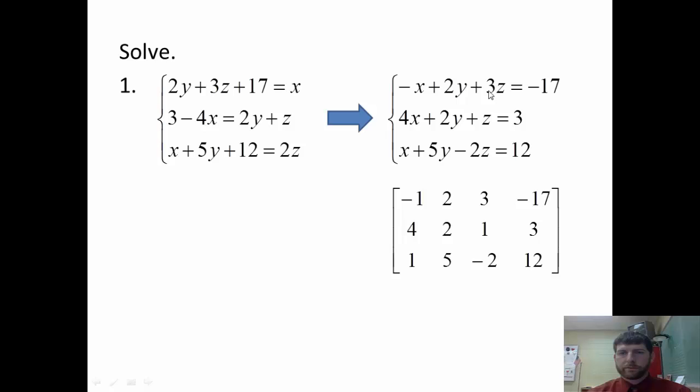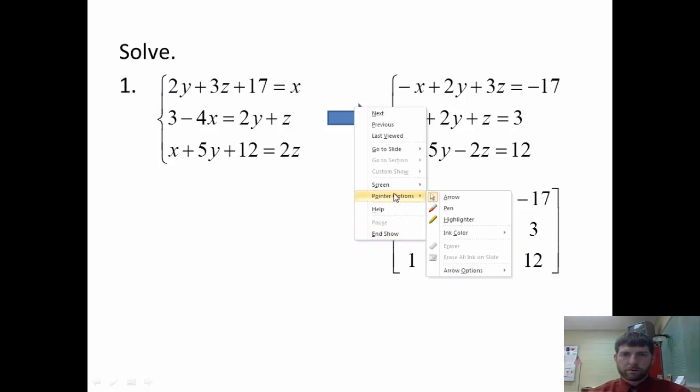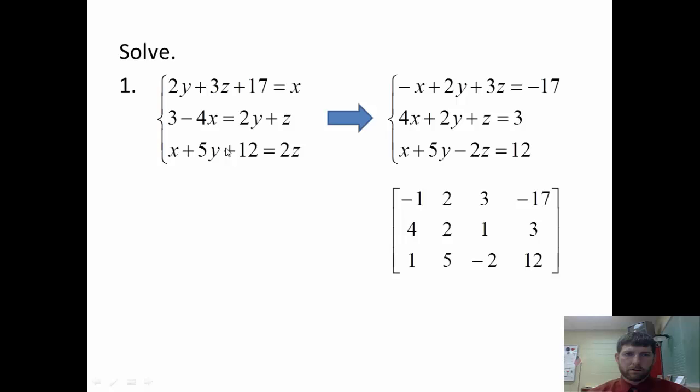3Z, 1Z, negative 2Z. Negative 17, 3, and 12. So remember, this should have been a minus, so we can add it back over to get the positive 12. And we'll get this system right here. From there, we're going to key it into the calculator, and I'll show you how to do that now.